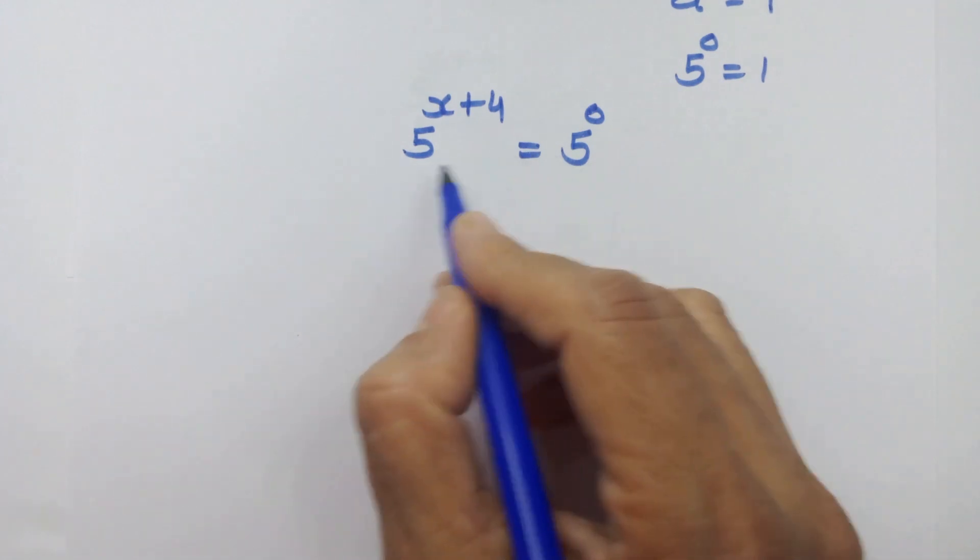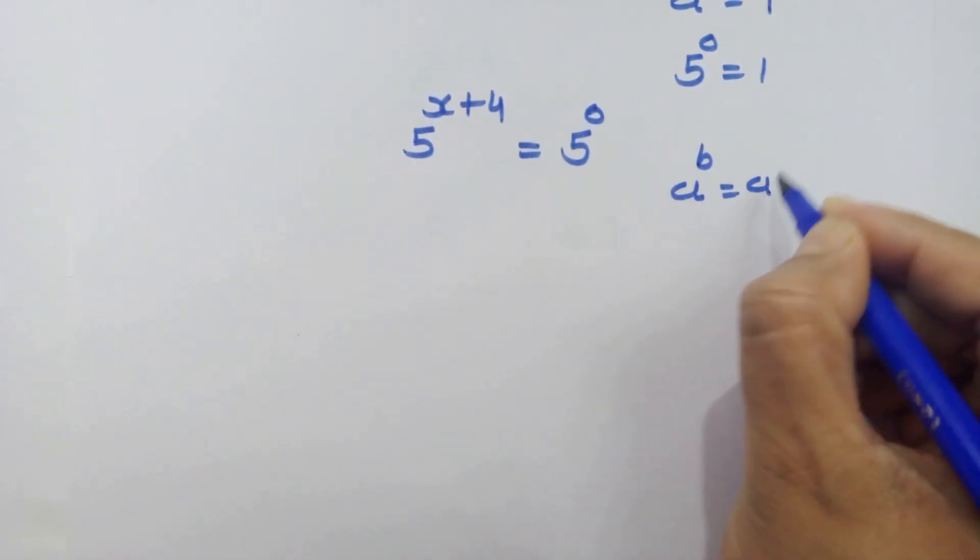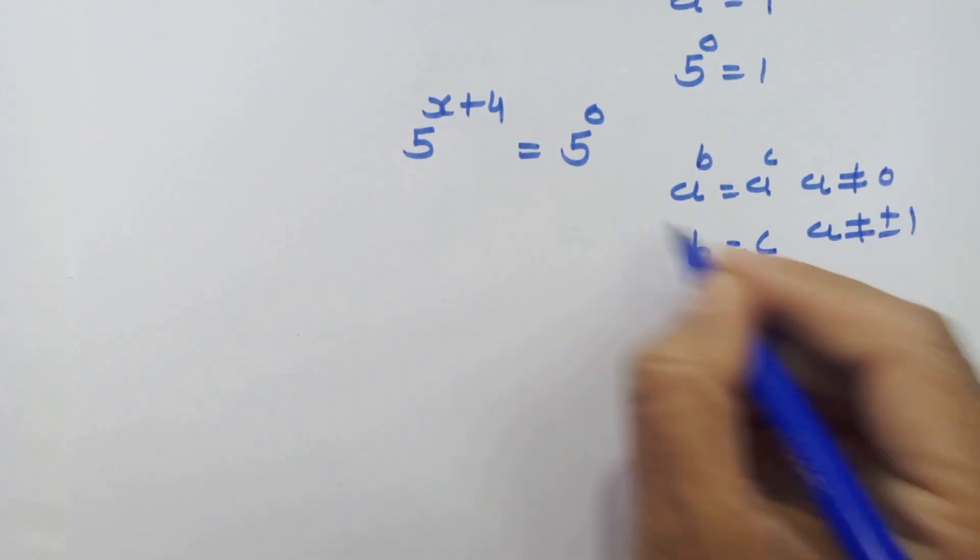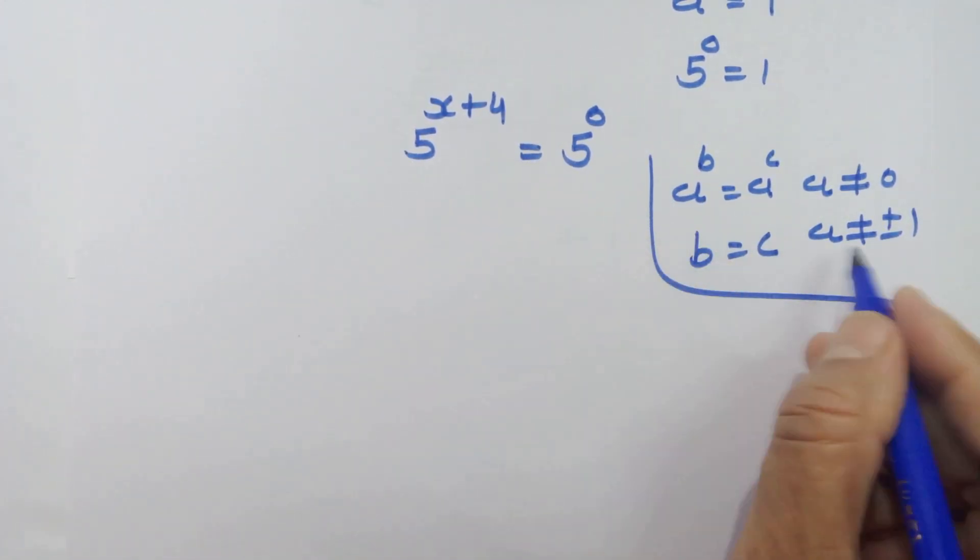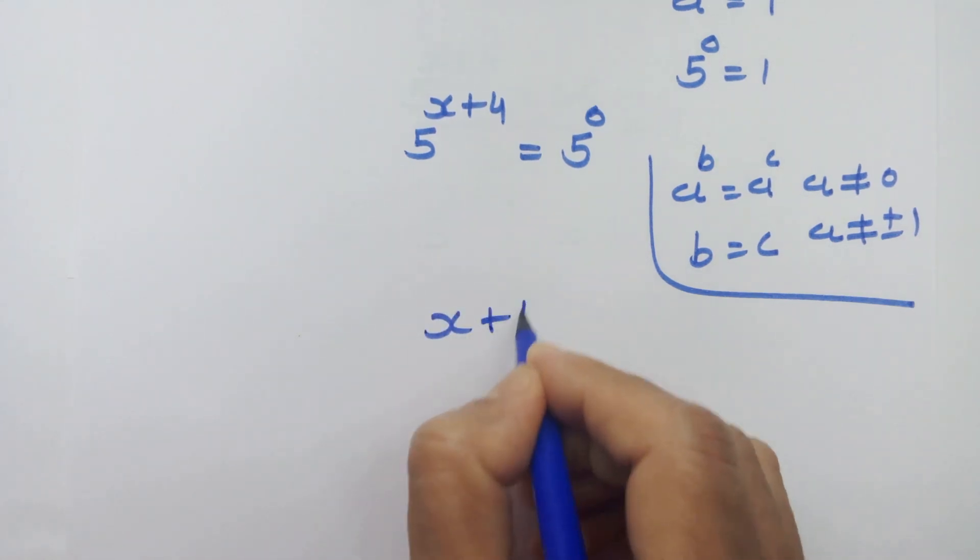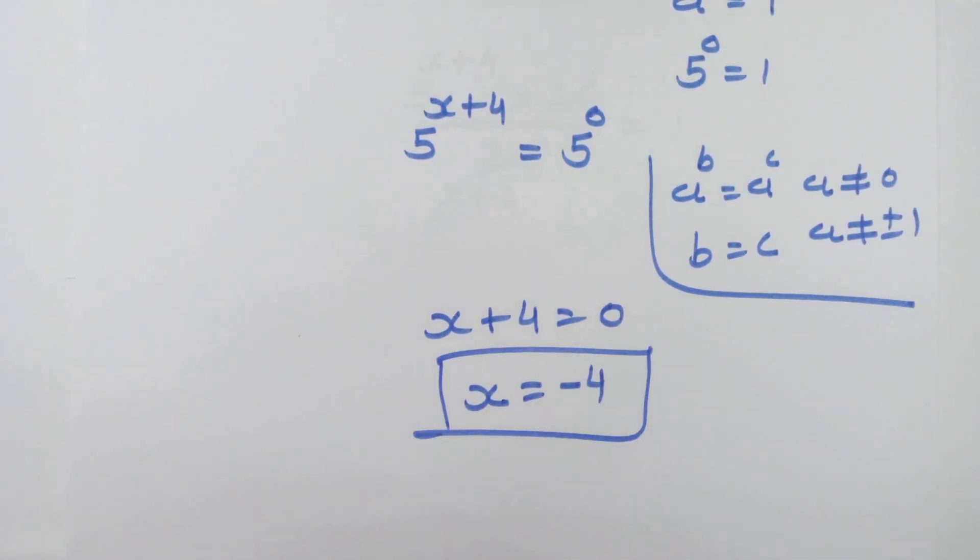Now we have same base at both the sides. So if we have a raise to b is equal to a raise to c where a is not equal to 0 and a is not equal to plus or minus 1, then we can equate the exponents b is equal to c. By using this rule here we can equate the exponents x plus 4 is equal to 0. So x is equal to minus 4. Now we have the value of x.